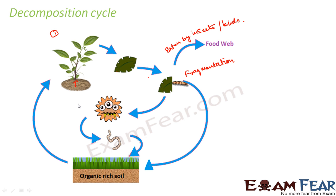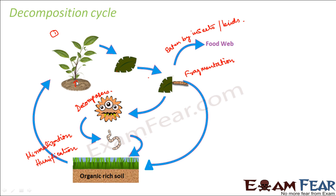Whatever material remains is then acted upon by the decomposers. These decomposers act on the leftover material, and the leaf matter gets deep inside the soil. Inside the soil, humification takes place — humus is formed — and this is followed by mineralization, where minerals are formed. These minerals again enrich the soil quality.